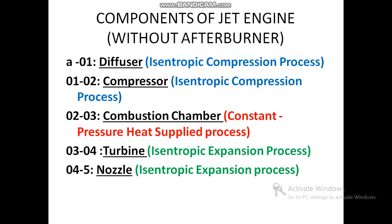The last device is called the nozzle. The nozzle is a device used to accelerate the flow, and the maximum amount of expansion takes place in the nozzle. Here I have mentioned 04 to 5, where 04 represents stagnation values and 5 represents static values — that is, the stagnation pressure and stagnation temperature are converted to static pressure and static temperature.